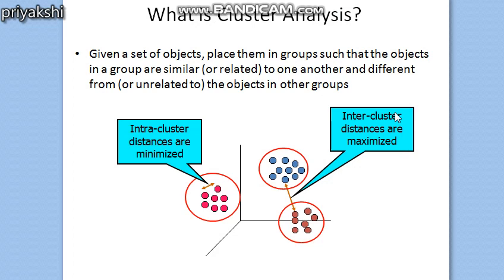Cluster analysis has a variety of applications, ranging from biology, information retrieval, climate control, and medicine. Biologists have applied clustering to analyze large amounts of genetic information. The worldwide web consists of billions of web pages and a search engine query can return thousands of pages — clustering can group these results into a smaller number of clusters, each capturing a particular aspect of the query. In climate control, cluster analysis has been applied to find patterns in atmospheric pressure of polar regions and oceans that significantly impact land climate. Clustering algorithms have also been used to identify different types of conditions in medicine.